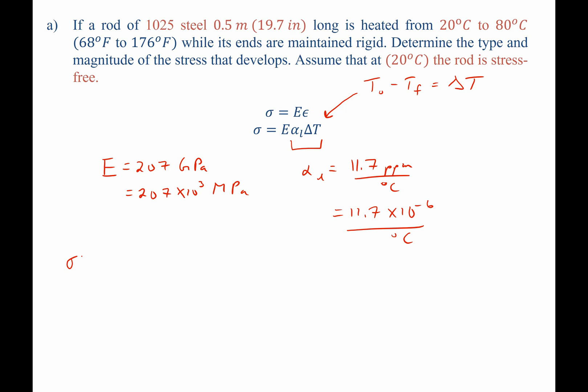So let's go ahead and solve for our thermal stress. Since the ends can't expand but they would like to, we're going to generate a thermal stress equal to 207 times 10 to the third megapascals multiplied by 11.7 times 10 to the negative sixth per degree Celsius. This will then be the temperature difference, initial minus final, so it's going to be 20 degrees Celsius minus 80 degrees Celsius. When I plug these into a calculator, I find that the thermal stress which arises is negative 145 megapascals.